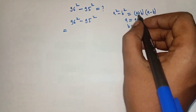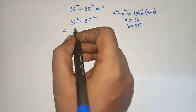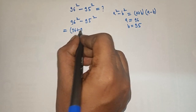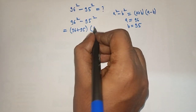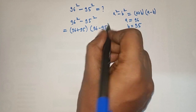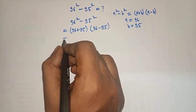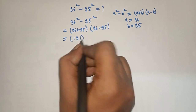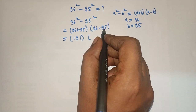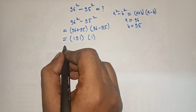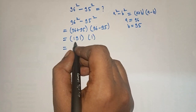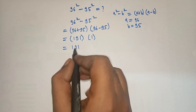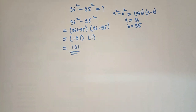We write a squared minus b squared as a plus b into a minus b, so it becomes 96 plus 95 into 96 minus 95. That equals 191 into 1, which equals 191. That is our answer. If you like my video, subscribe to my channel.